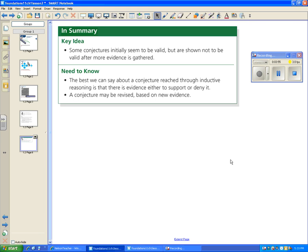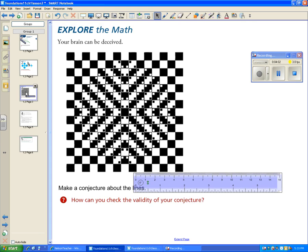A conjecture may be revised based on new evidence. So for instance here, our conjecture was that these lines were curved. Based on our new evidence, we would now say that these lines are straight. Our new evidence that we got with our ruler here.